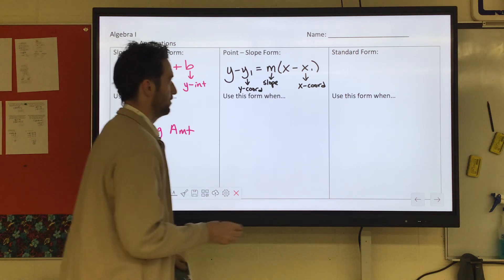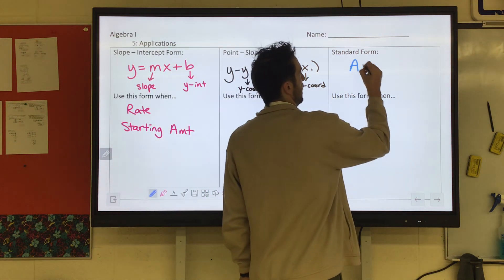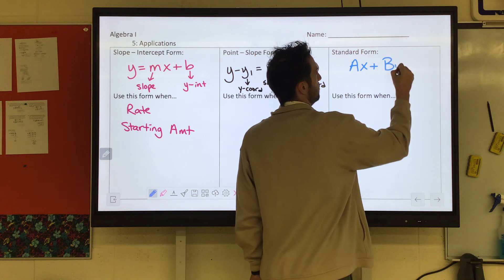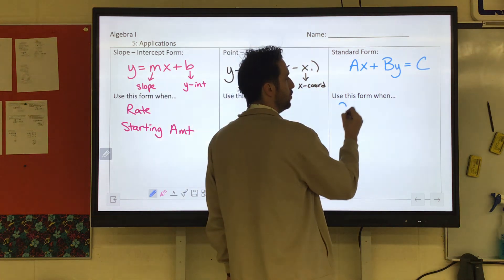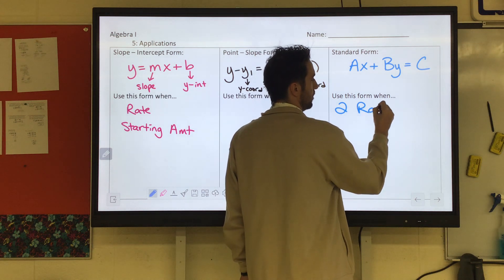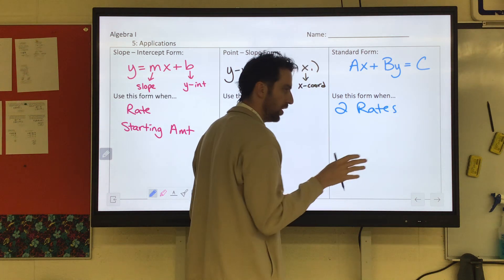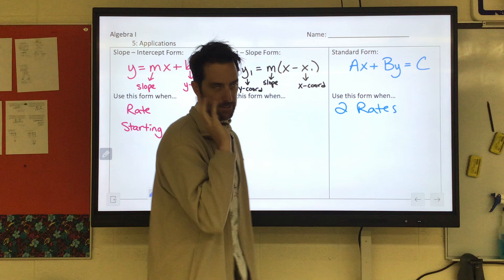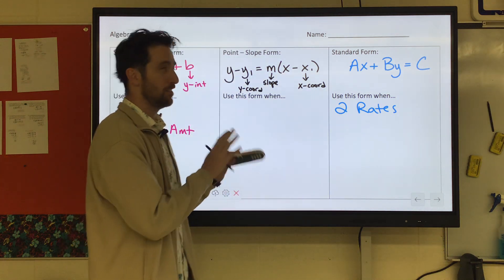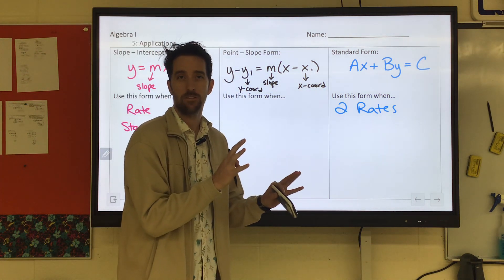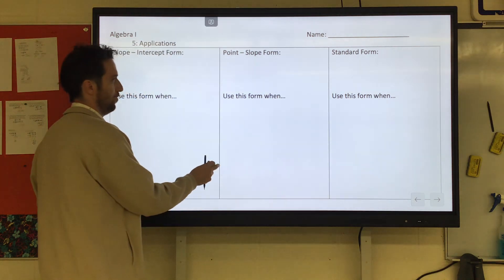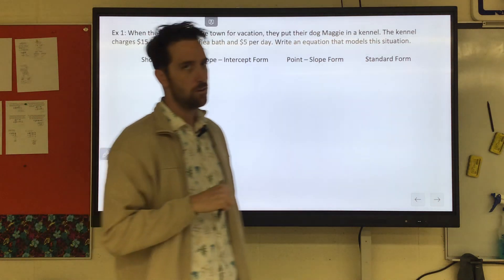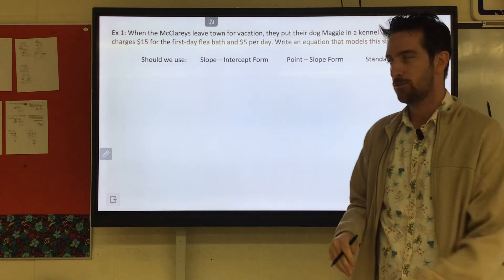And then standard form. That's when you got the x and y on the same side. And it's great when they give you two rates, or like the cost per item for two items. That's great for standard form. I actually think the standard form ones are the easiest ones to set up. But that's just me. Let's try some stuff out. We got three. It's going to go one of each form. And then you're going to try two out.